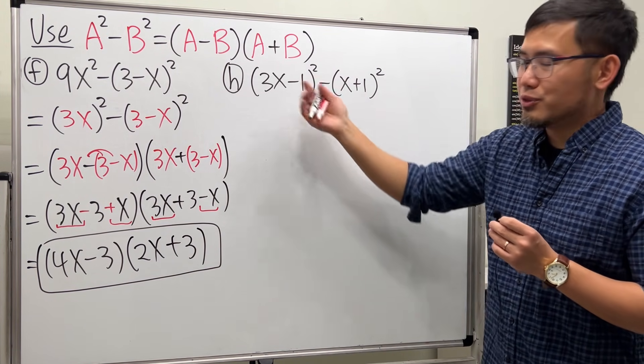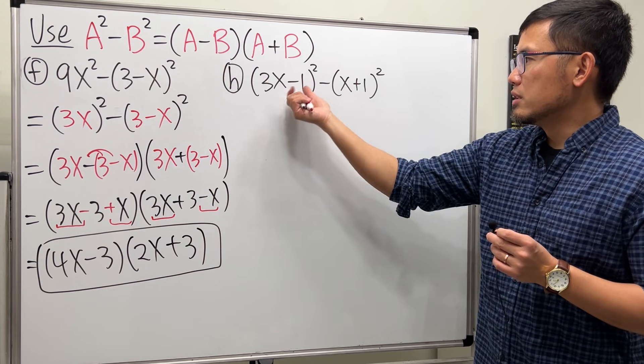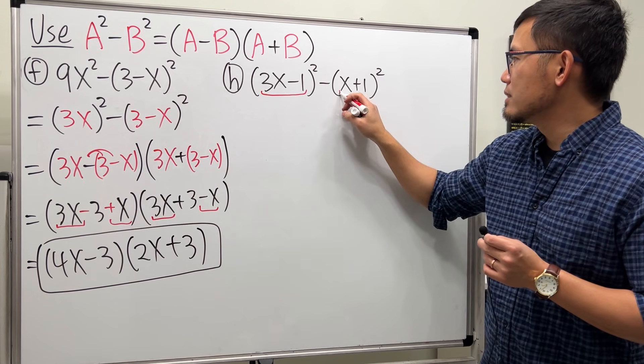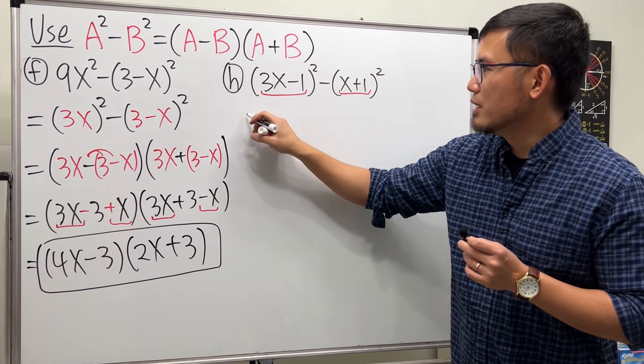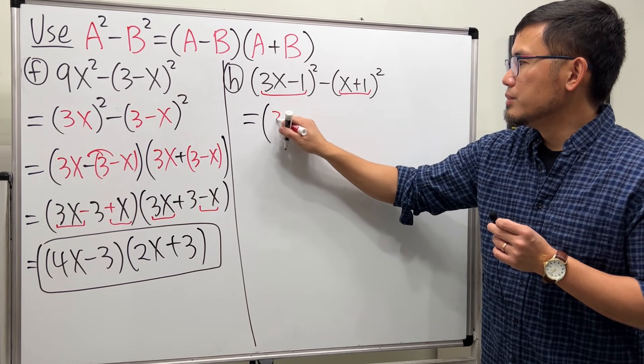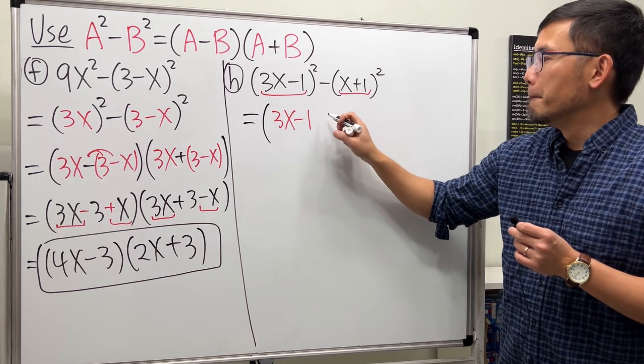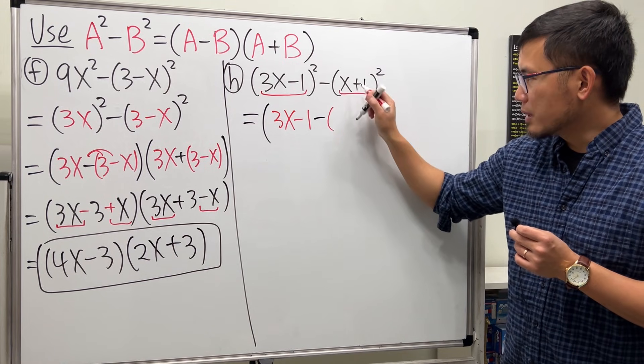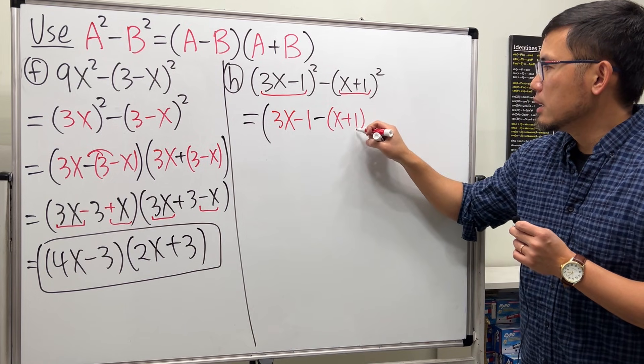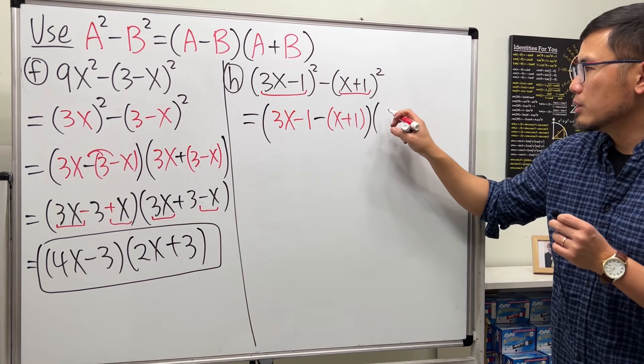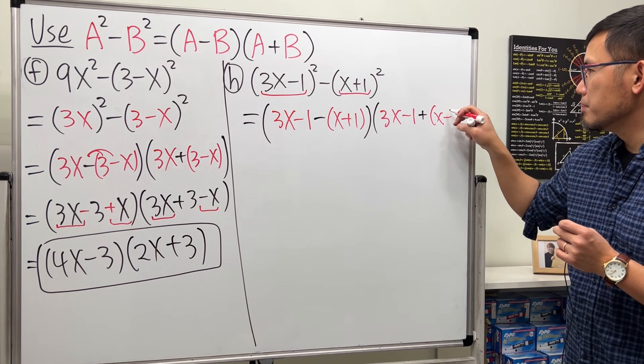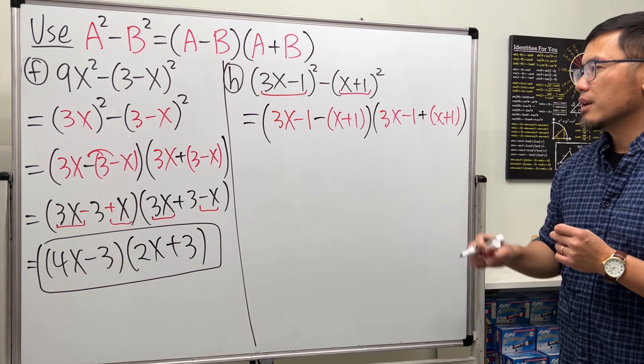Now for the second one right here H, it's already done for us, so we can just use this formula. Let me just write this down right here, this is the A, that's the B. Check this out: A is 3x minus 1 minus the second, which is again parenthesis because we have two terms, x plus 1, and then continue that, 3x minus 1, and then plus x plus 1.